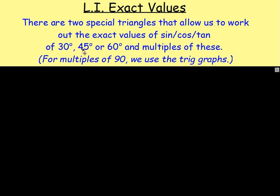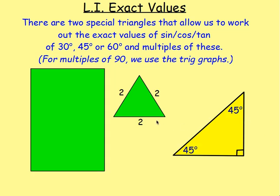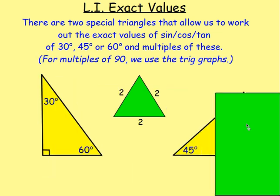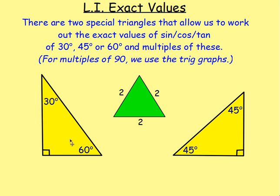But if you want the sine, cos, or tan of 30, 45, or 60, you use two special triangles. The first is an equilateral triangle — all sides the same, all angles the same — and we're going to chop that down the middle. We end up with just half of that triangle. The shortest side is 1, and the longest will still be 2.